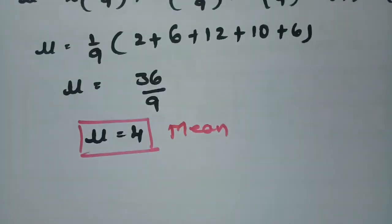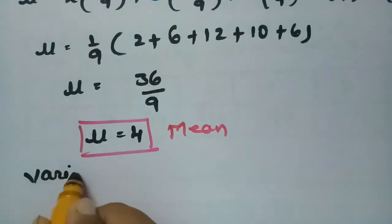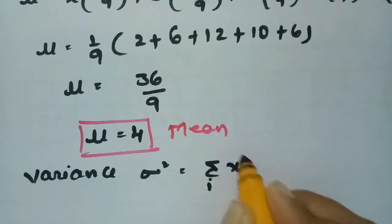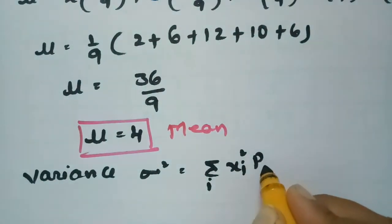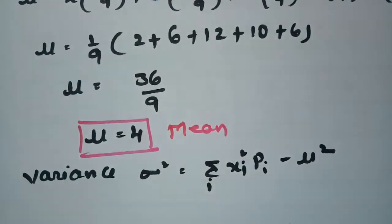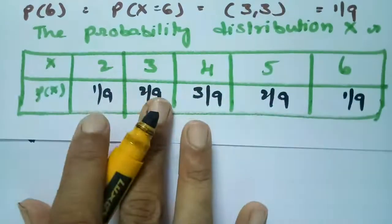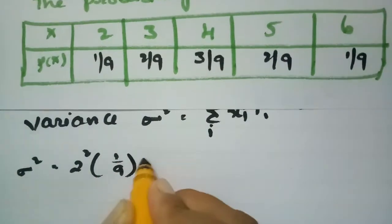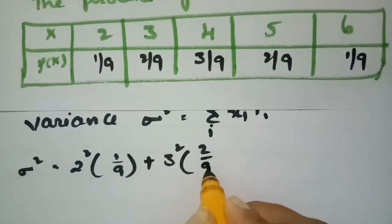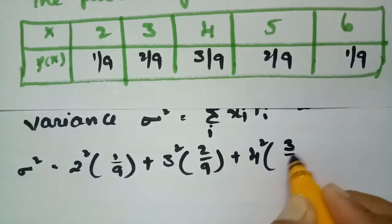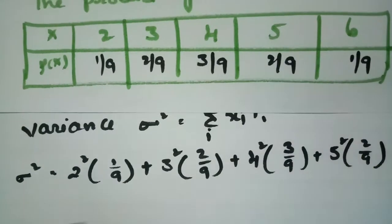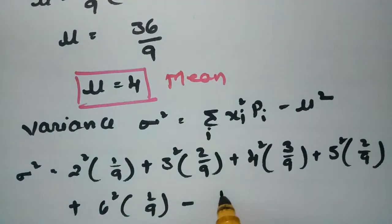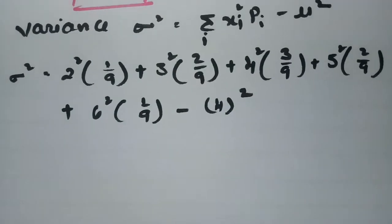For variance, σ² = Σ xi²·pi − μ². Squaring each X value and multiplying by its probability: σ² = 2²·(1/9) + 3²·(2/9) + 4²·(3/9) + 5²·(2/9) + 6²·(1/9) − 4².